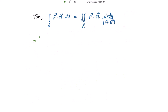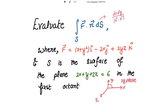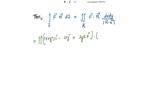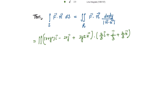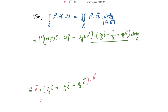Putting this value of n⃗ into the integral, we get the double integral of F⃗ · n⃗. F⃗ is given as (x + y²)î - 2x ĵ + 2yz k̂, and n⃗ is (2/3)î + (1/3)ĵ + (2/3)k̂, then dx dy divided by |n⃗ · k̂|. The dot product of k̂ with k̂ is 1 and otherwise zero, so |n⃗ · k̂| = 2/3.